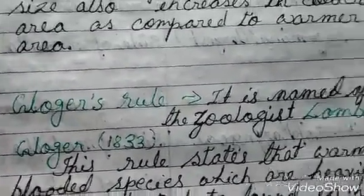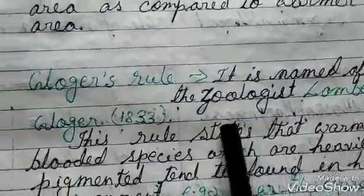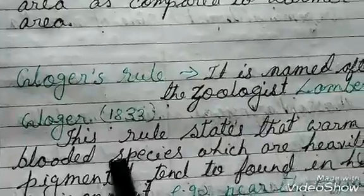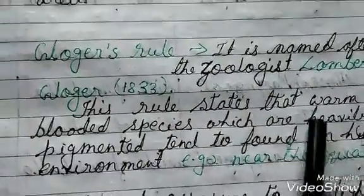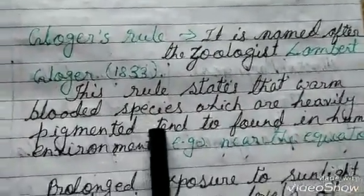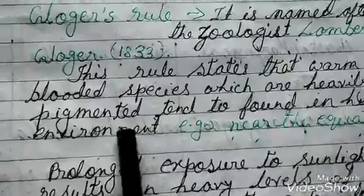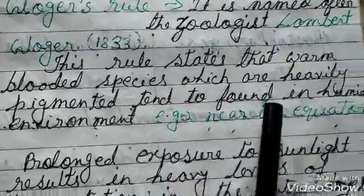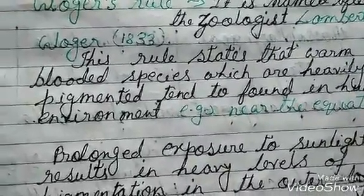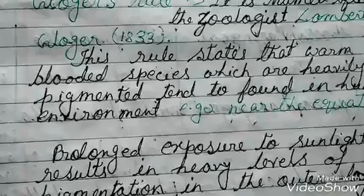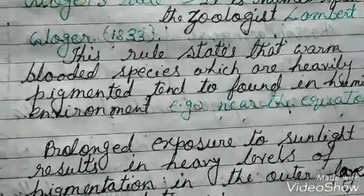Gloger's rule is named after the zoologist Lambert Gloger. This rule states that warm-blooded species which are heavily pigmented tend to be found in humid or warm environments, meaning near the equator.